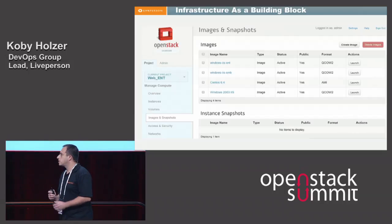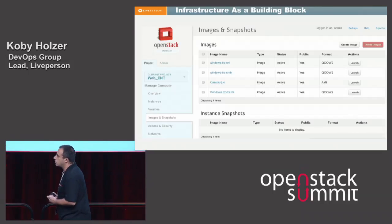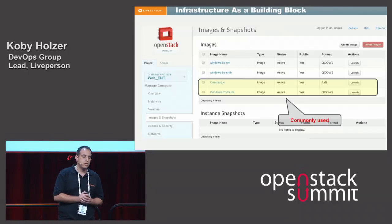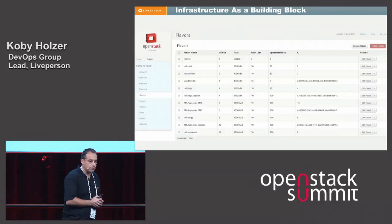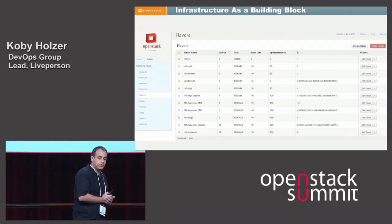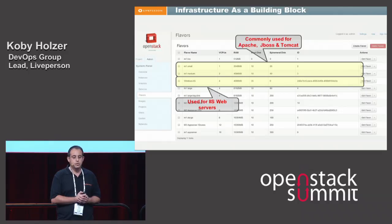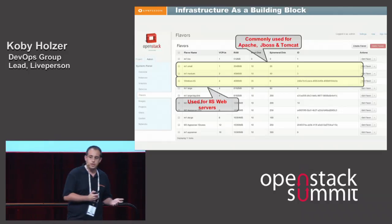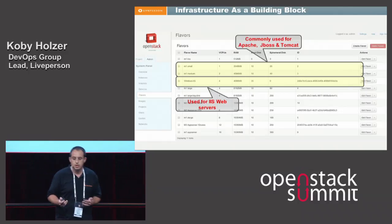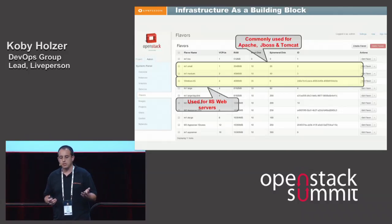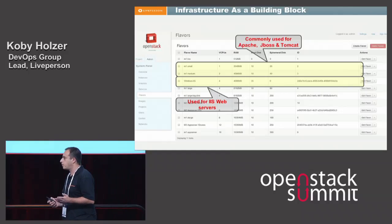This is a real snapshot from our production OpenStack. As you can see, we mainly use CentOS 6.4 and Windows Server 2003 images. In terms of flavors, we have many available, but we mainly use two-core and four-core instances with four gigabytes of RAM. It's also possible to use much bigger flavors — as you can see here, we also use 16-core instances with 15 gigabytes of RAM.